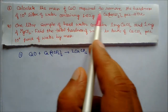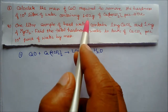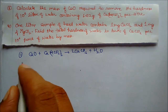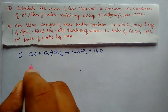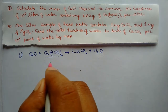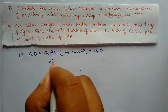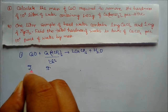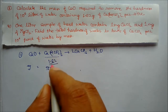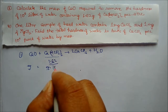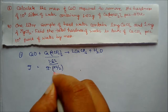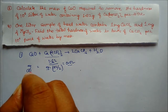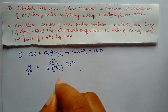The question asks to calculate the amount of calcium oxide to remove hardness of 10⁶ liters of water containing 1.62 grams of calcium bicarbonate per liter. Equivalents of calcium bicarbonate: weight is 1.62 grams, divided by molar mass 162, with n-factor 2. Solving gives 0.02 equivalents. Equivalents of calcium oxide equal equivalents of calcium bicarbonate, so equivalents of CaO = 0.02.